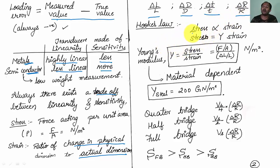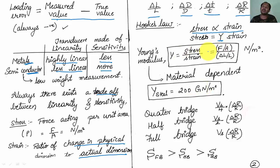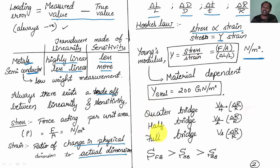Hooke's law states that stress is proportional to strain. To remove the proportionality constant, we introduce Young's modulus Y, given by stress divided by strain — that is, (force/area) divided by (delta L / L). The unit remains Newtons per meter square. Young's modulus is material dependent. For engineering service examinations, remember that Young's modulus of steel is 200 giga Newtons per meter square.